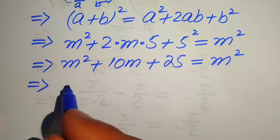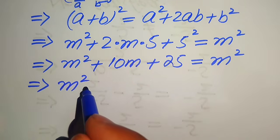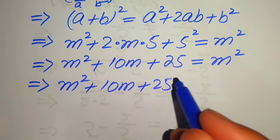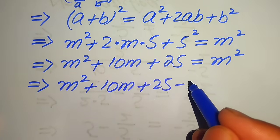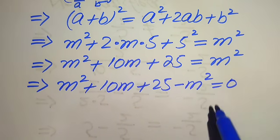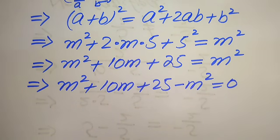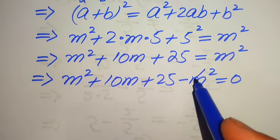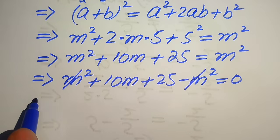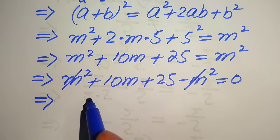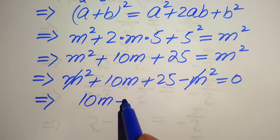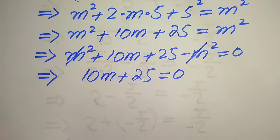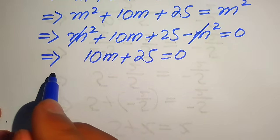In the next step we move this m square to the left hand side, so it will be written as m square plus 10m plus 25 minus m square equals to 0. The positive m square and negative m square cancel out, and we obtain 10m plus 25 equals to 0.